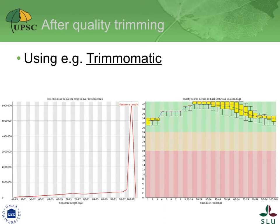To remove adapter sequences and trim bad quality bases, we use a tool called Trimmomatic. After running it, since it modifies the data, we re-run the quality assessment with FastQC. On the right panel, you can see the effect on the quality — it looks much better now. A side effect of the trimming, as shown in the left graph displaying the density distribution of read length, is that reads are no longer of a unique length. In that example, some have a size between 50 and 99 base pairs, instead of the initial 101.